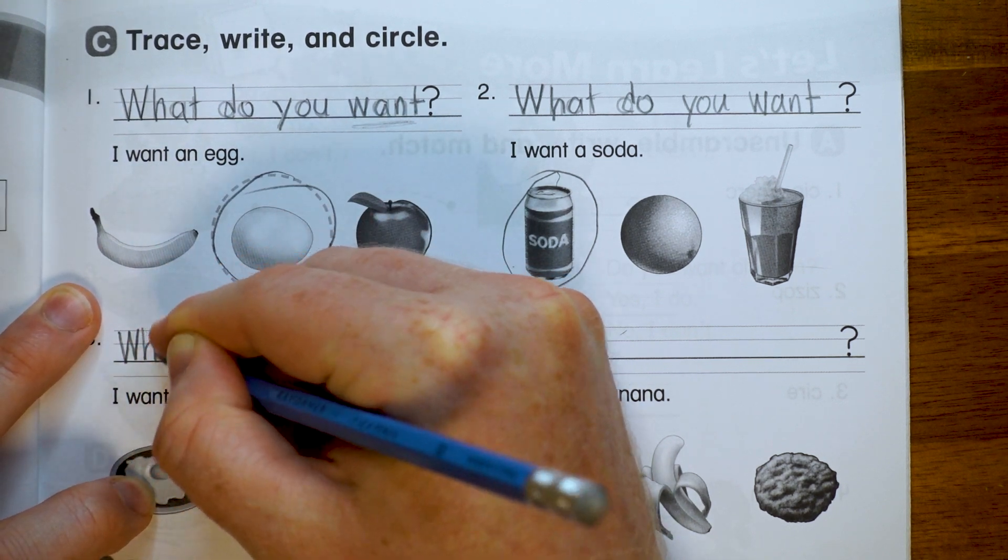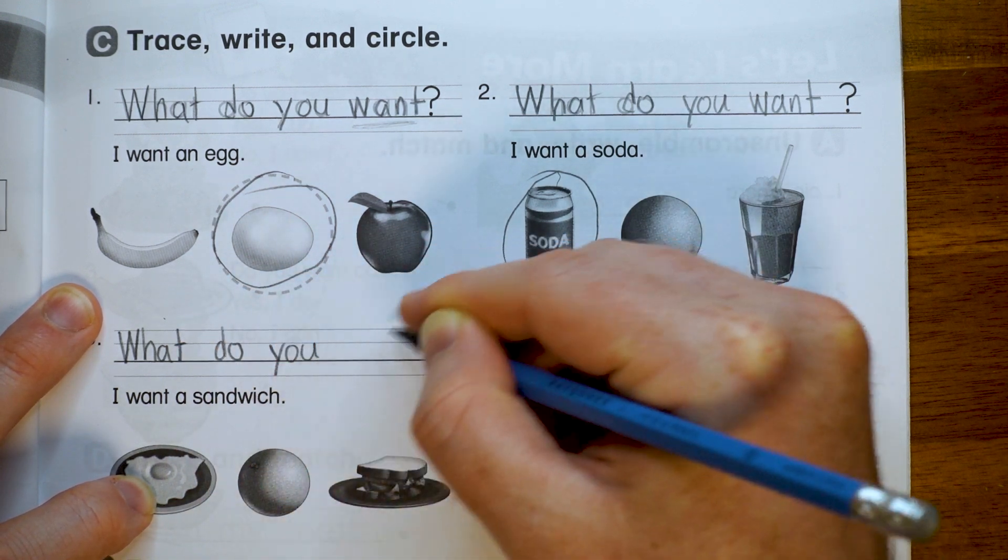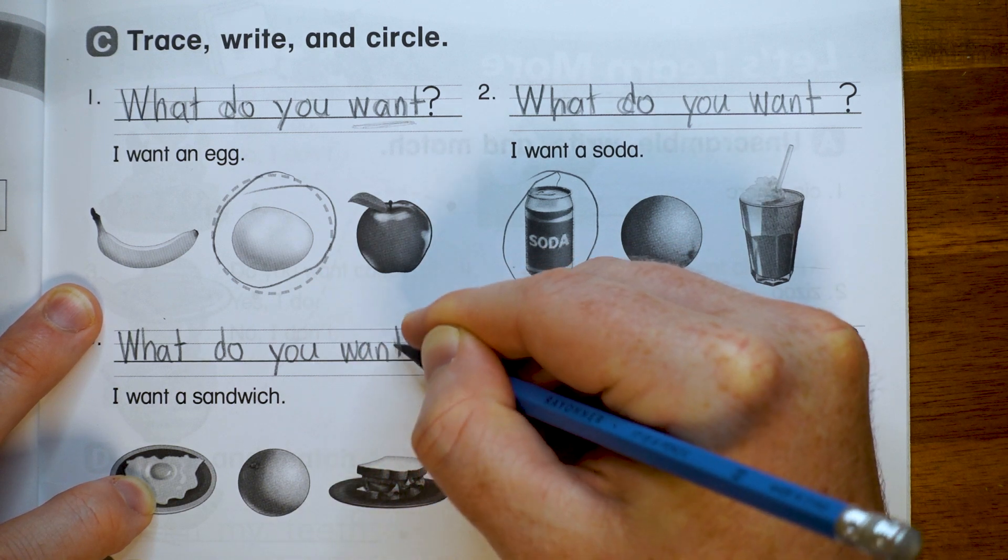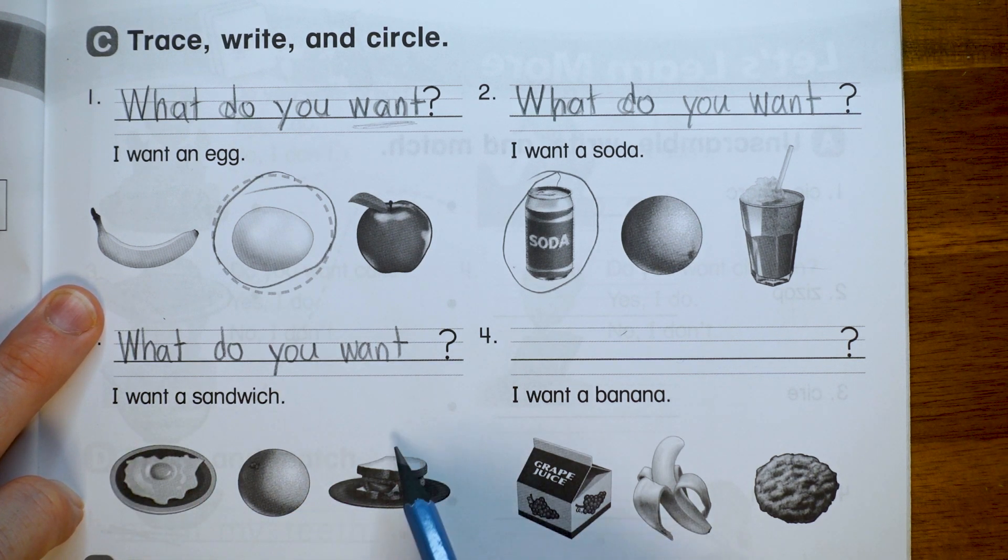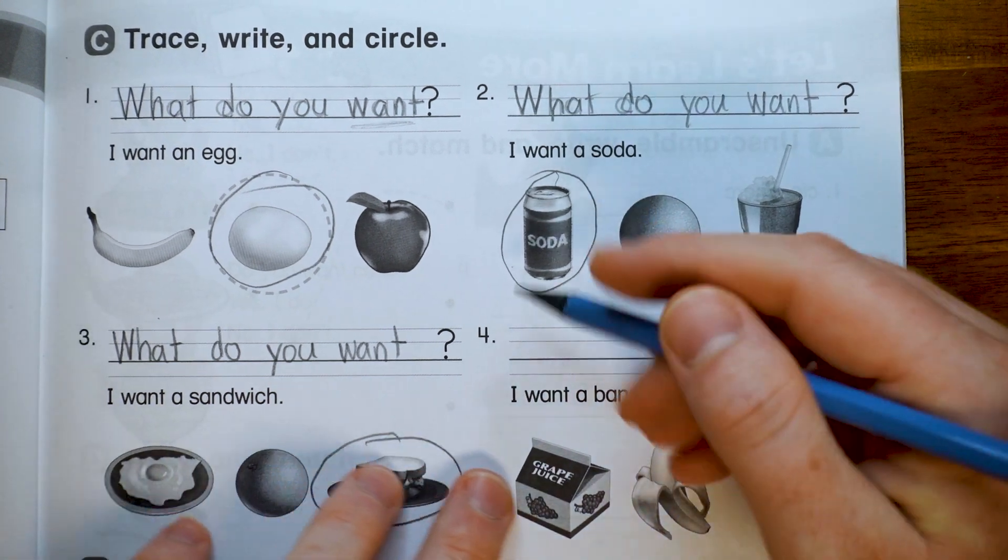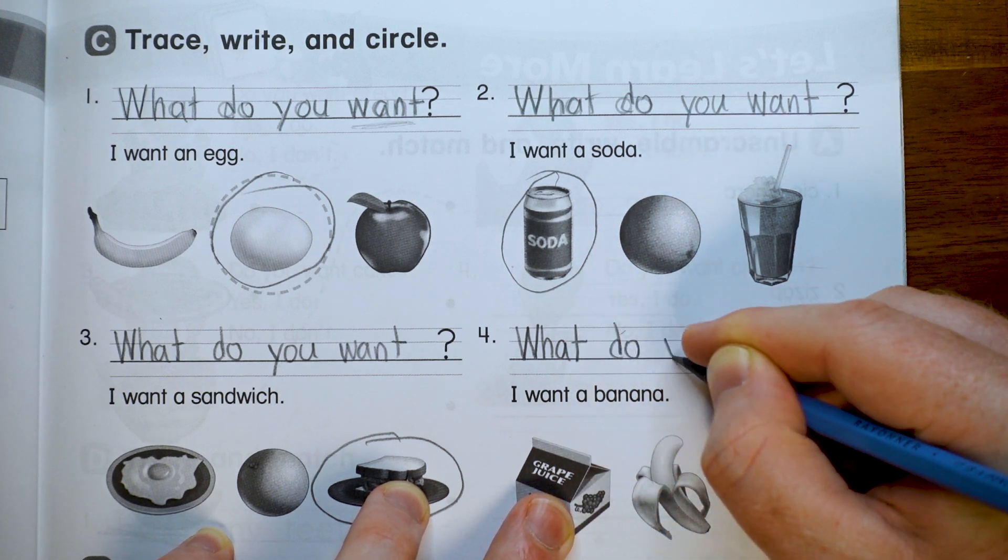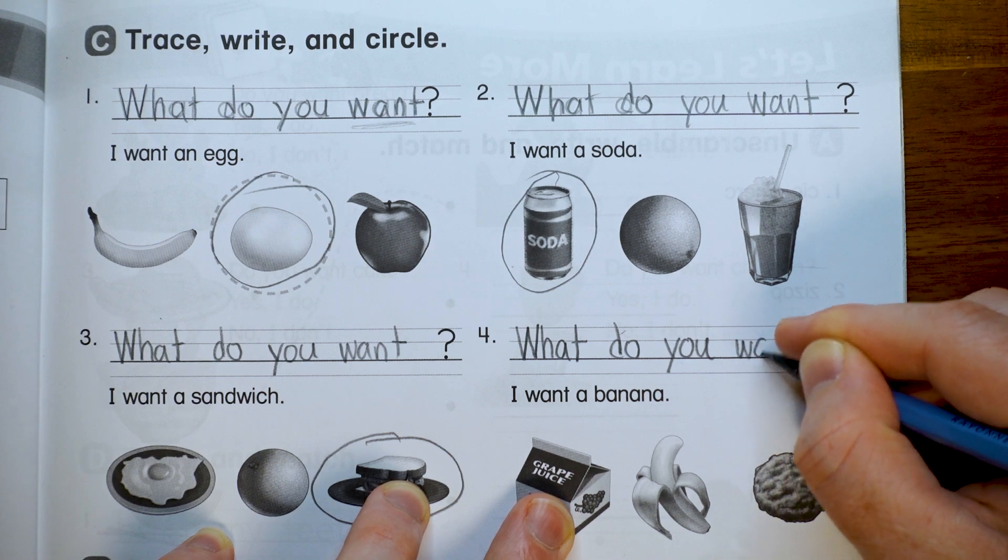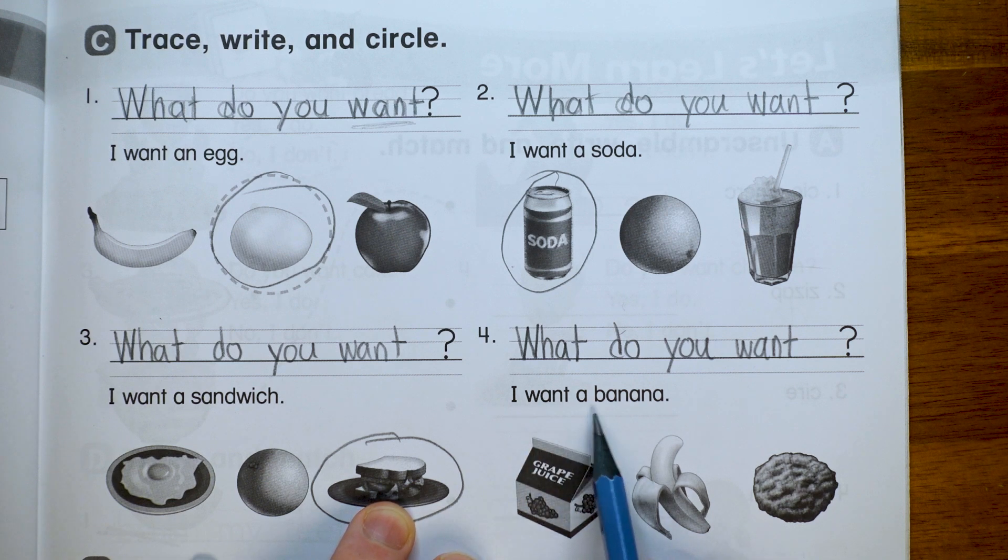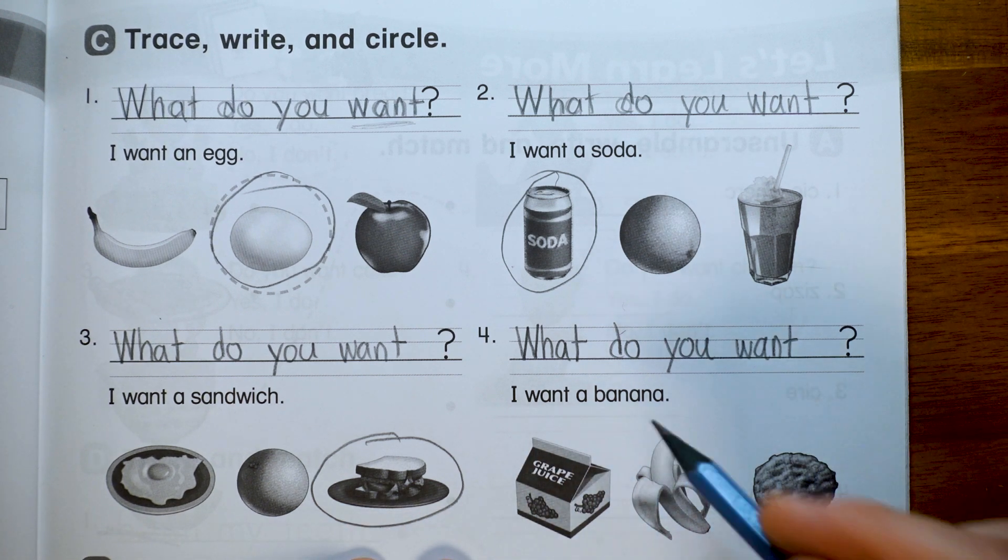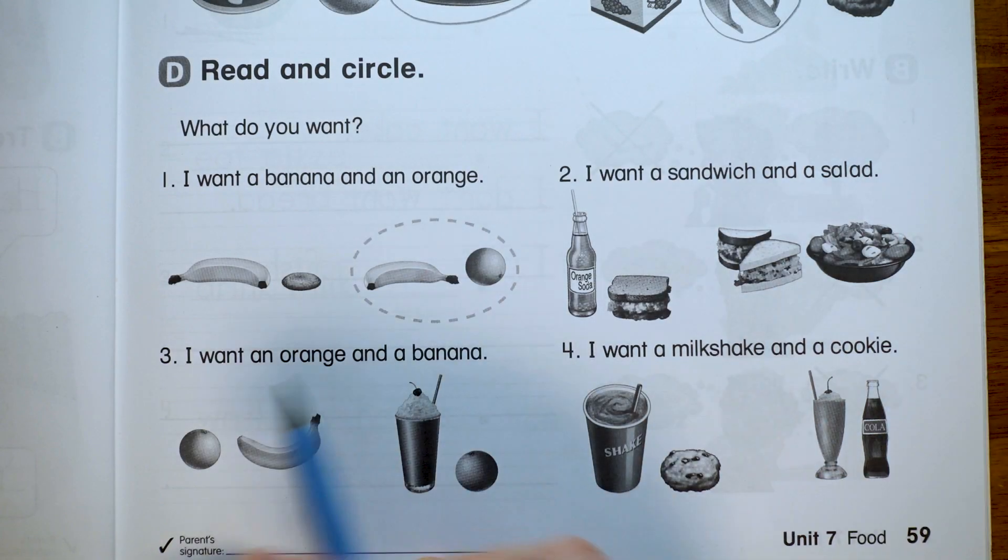What, the big W, H-A-T, do, D-O, you, Y-O-U, want, W-A-N-T. What do you want? I want a sandwich. Sandwich, sandwich. There's the sandwich. Number four. The same question again. What do you want? I want a banana. There's the banana. Great job. Part C is done.